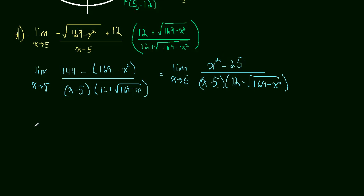This numerator can be simplified. Let me go back to green. So the limit as x approaches 5, x squared minus 25, that can be factored to x minus 5 times x plus 5. And I think you saw that coming. All over x minus 5 times 12 plus the square root of 169 minus x squared.